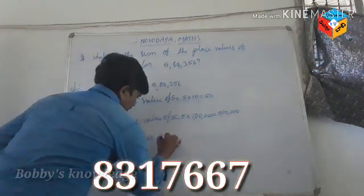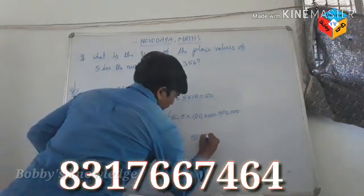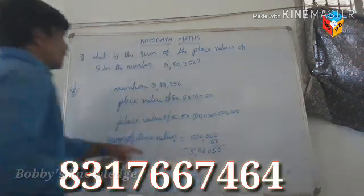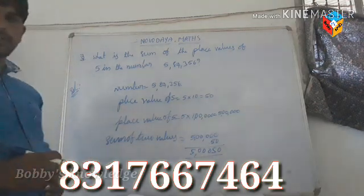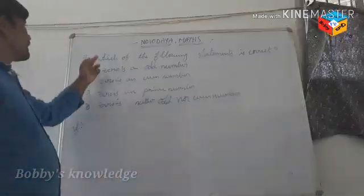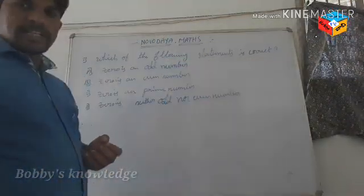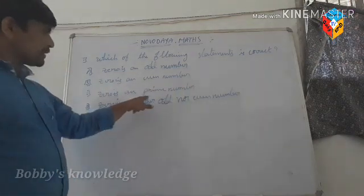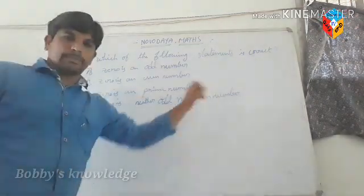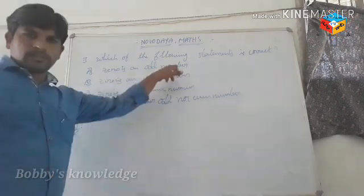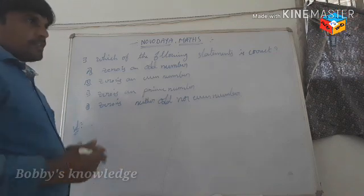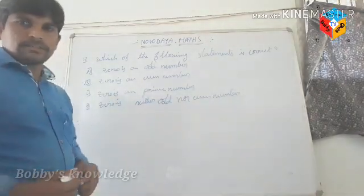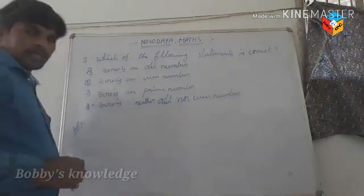Okay, understand. Next sum: which of the following statements is correct? The options are: zero is an odd number; zero is an even number; zero is a prime number; zero is neither odd nor even. Zero is not an odd number — no. Zero is not an even number — no. The answer is the last one: zero is neither odd nor even.